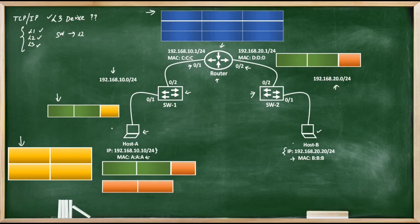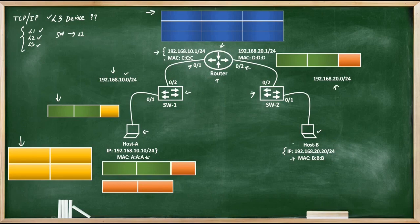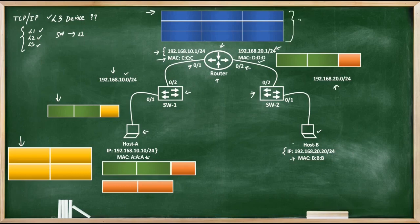A router is a Layer 3 device and we need to assign an IP address to its interfaces. The 0/1 interface is connected to the 192.168.10.0 network, so we assign it the first IP address from this subnet: 192.168.10.1. This interface's MAC address is C:C:C. Similarly, the IP address of the 0/2 interface is 192.168.20.1 and its MAC address is D:D:D. When you configure an IP address on a router's interface, the router starts filling its routing table.